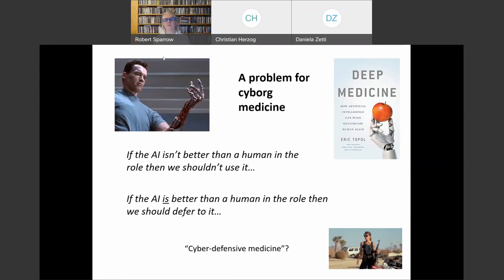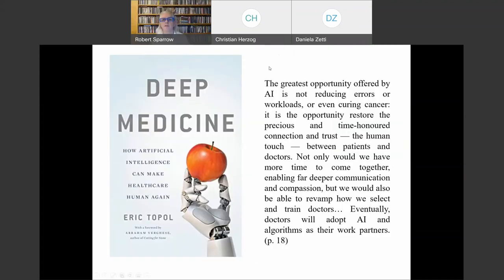If the machines are really better, if someone can show robust data that a machine is outperforming a human physician in a particular role, it seems to me to follow very quickly that we shouldn't have human beings doing that anymore. You can imagine in a situation where there's just a suspicion, where you've got near peer performance, you can imagine people feeling they need to at least check in with the machine or defer to the machine.